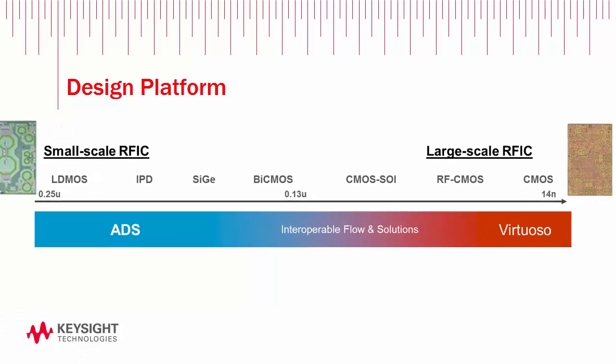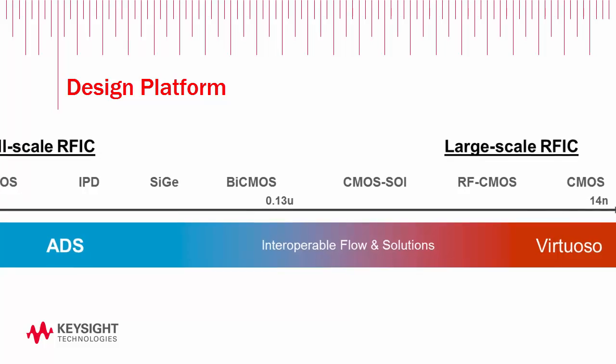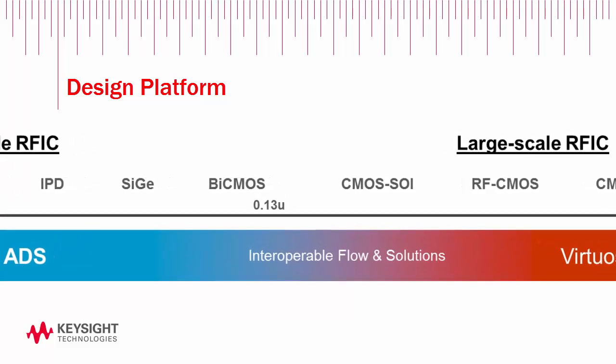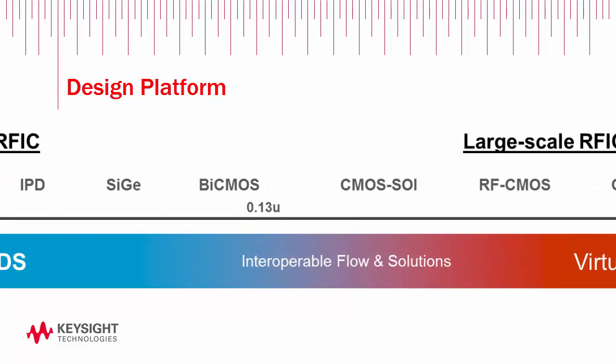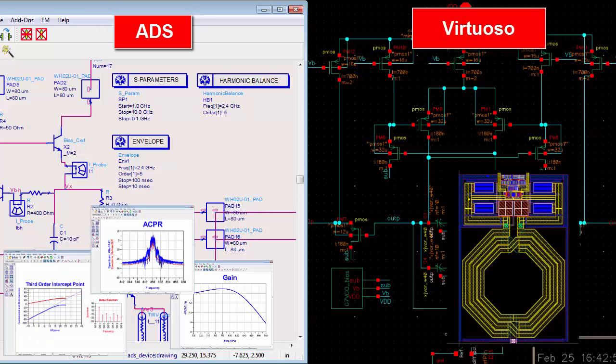In between, there are many factors that influence tool flow including PDK availability, circuit type, application, and designer preference. But ultimately, the use of more than one platform is often desirable.